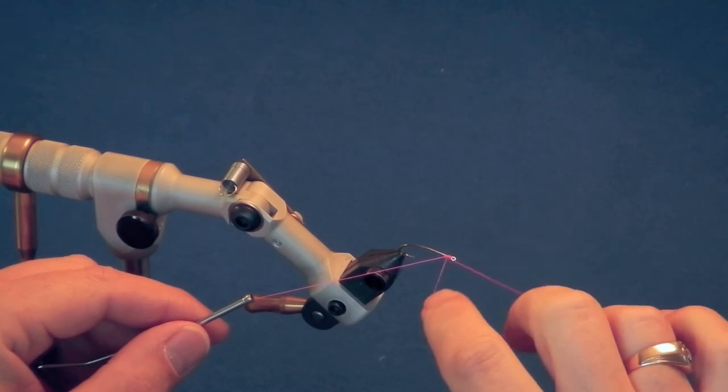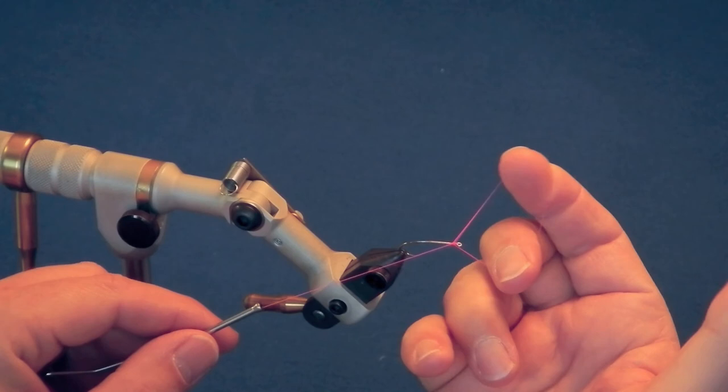Direct the portion of the loop on your right index finger clockwise around the hook shank while rotating your hand to palm up, pulling the loop away from you against the hook shank. This makes a wrap, or whip, of thread around the hook shank.